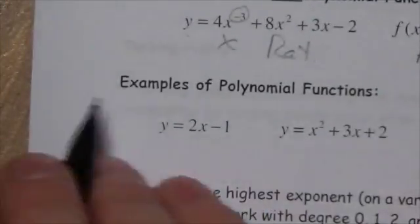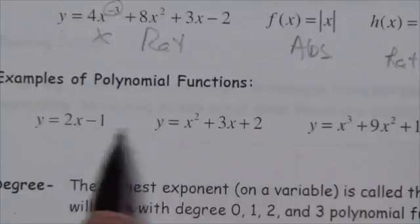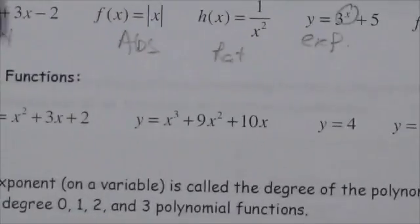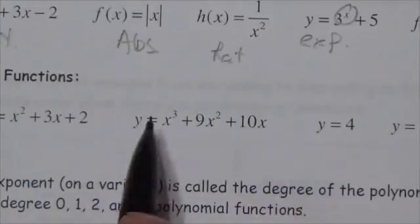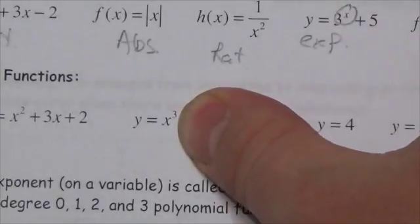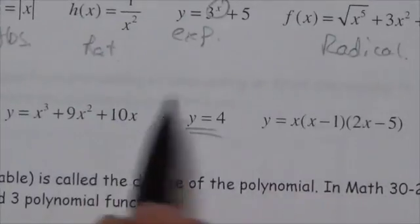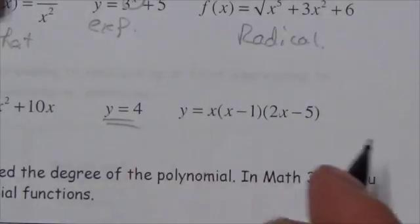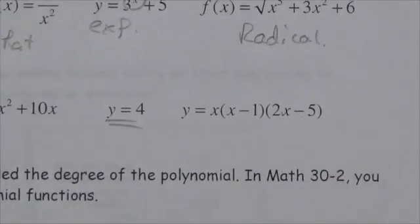Examples of polynomial functions: y = 2x − 1 — simple, exponent on x is 1. A quadratic goes from squared down to a constant. Here's a cubic — I don't have to have all terms; y = x³ alone is enough, or even y = 4, a constant function. In factored form, x times x times x gives x³. As long as we're not getting negative or rational exponents, we're good.